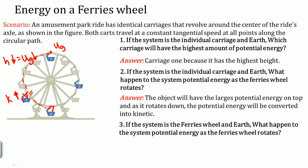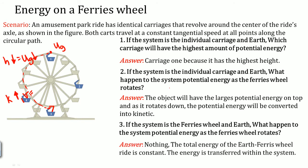If the system is the Ferris wheel and Earth, what happens to the system's potential energy as the wheel rotates? Nothing. The difference between this question and the previous one is the individual carriage and Earth versus the entire Ferris wheel and Earth. If you treat it as the entire system of the Ferris wheel, the energy stays within the Ferris wheel — nothing changes.